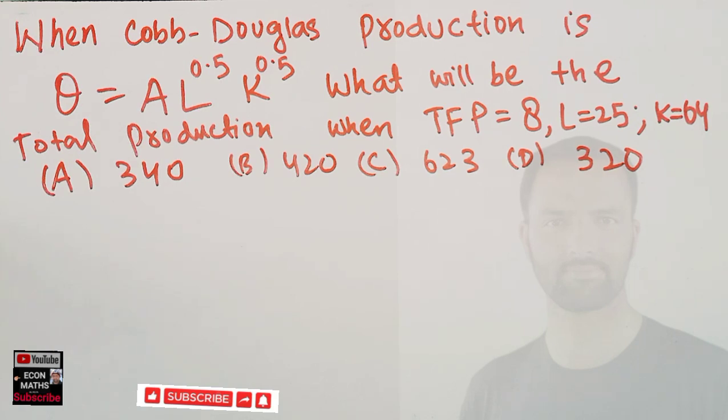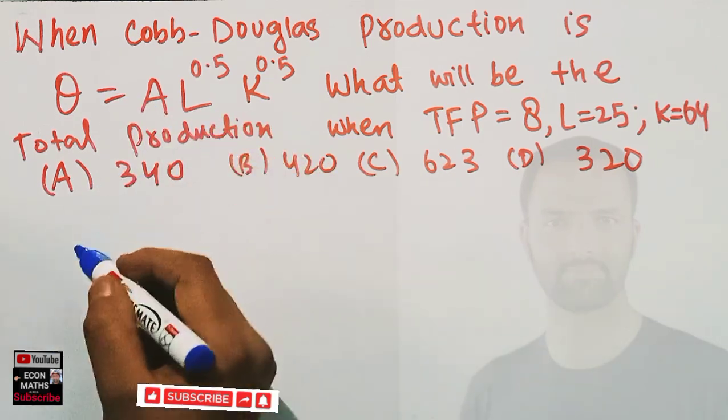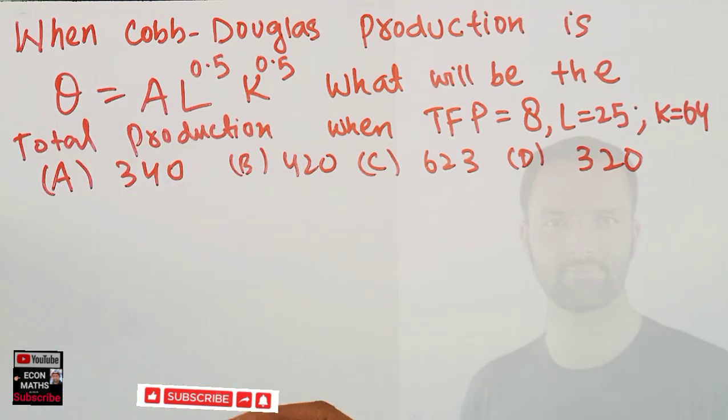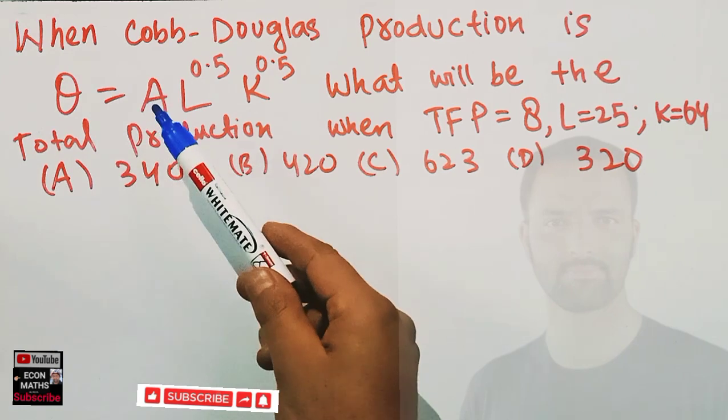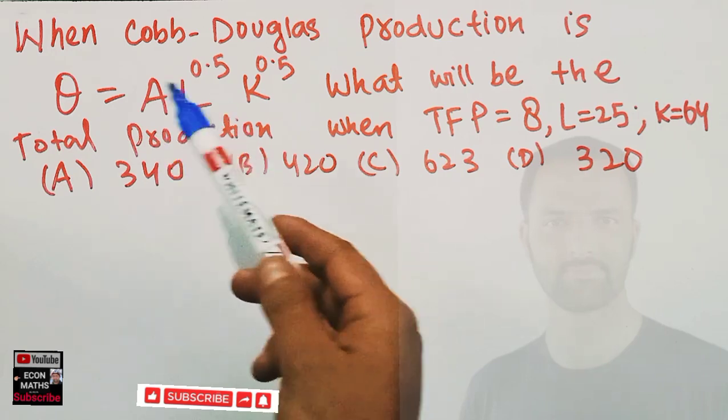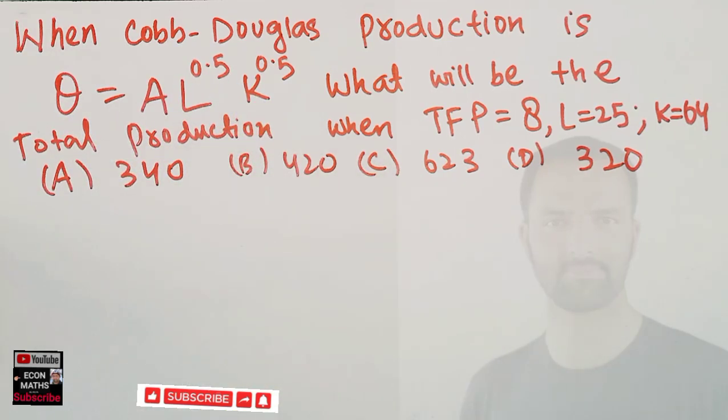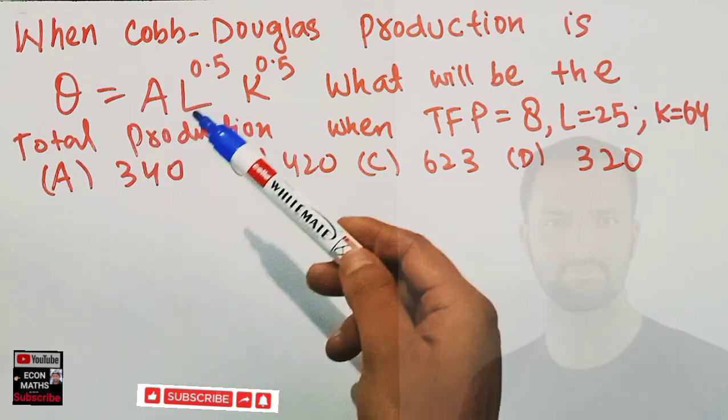We have a typical Cobb-Douglas production function. Q denotes the total output. A is the total factor productivity or the state of technology, showing the change in output not explained by labor or capital. L is the labor and K is the capital.